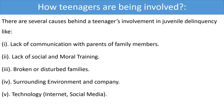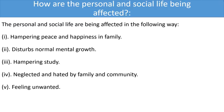Dear girls, these are the reasons for a teenager's involvement in juvenile delinquency. How are the personal and social life being affected? When a child or teenager is drug-addicted, involved in crimes, and out of school, it hampers peace and happiness in the family, disturbs the normal mental growth of that child, hampers their studies, and the child feels neglected and hated by family and community — also feeling unwanted.